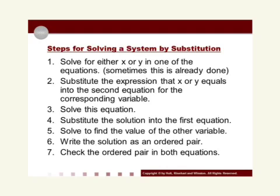Step two calls for us to substitute the expression that x or y equals into the second equation for the corresponding variable. In other words, take that isolated variable and substitute what it equals into the other equation. That will leave you with a multi-step equation, and step three is to solve that multi-step equation. After solving, you'll have one of your ordered pair values. That leads to step four, which is to substitute the solution into the first equation. You then solve that equation to find the value of the other variable in step five, leaving you with an ordered pair solution. Step six: write that solution as an ordered pair.